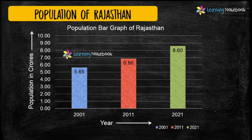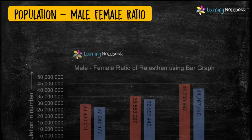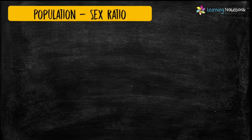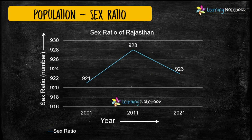You can depict population of Rajasthan through beautiful bar graphs or line graphs. Double bar graphs can be used to show the male and female ratio of the population of Rajasthan, as shown here. One can also use a line chart to show the sex ratio of the population of Rajasthan.